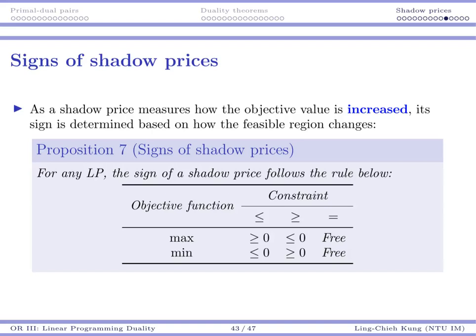Shadow prices have some managerial implications. Shadow prices measure how the objective value would be increased when you have some modification at your right-hand side. In practice, even though in our previous mathematical examples we see that when you increase the right-hand side by one the optimal basis may change, in practice that rarely happens.